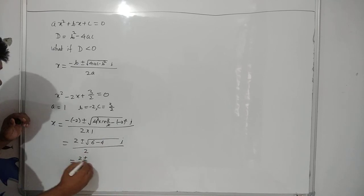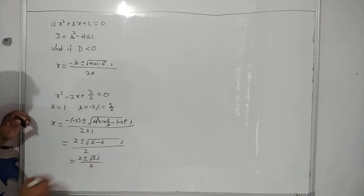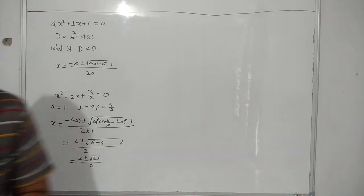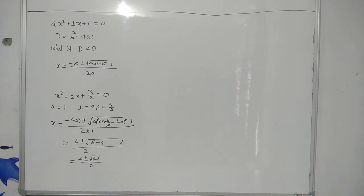So, the final answer is 2 plus minus root 2 iota by 2. This is the final answer. This is how we will solve the quadratic equation when d is less than 0.